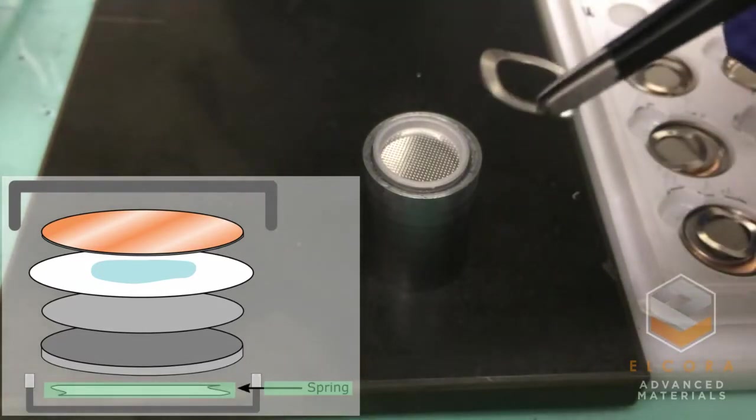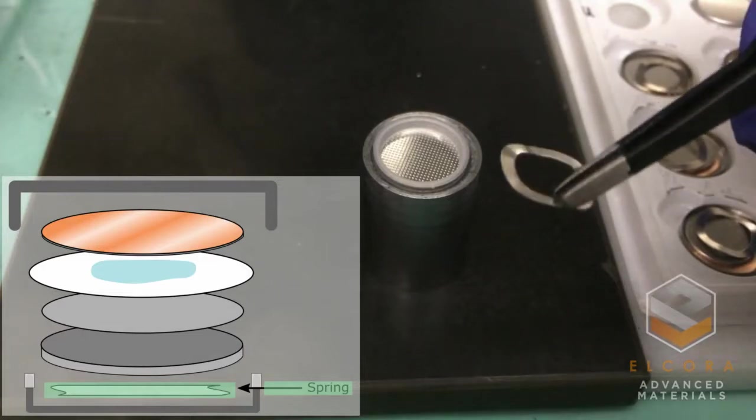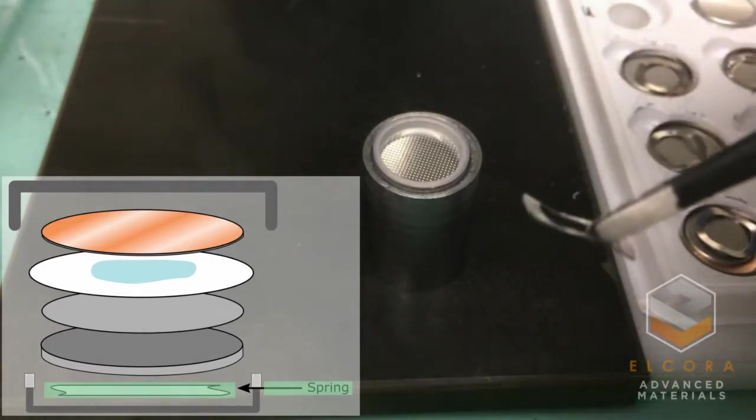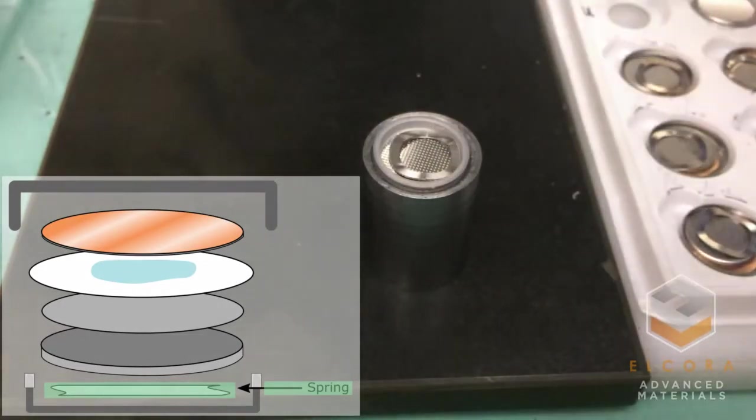Next I place a stainless steel spring into the cup. The spring will ensure good electrical contact between the components once the cell is sealed.